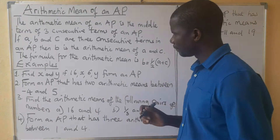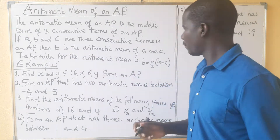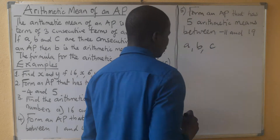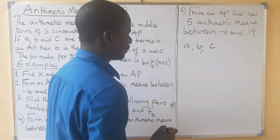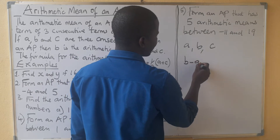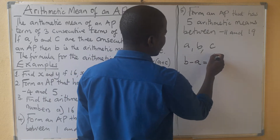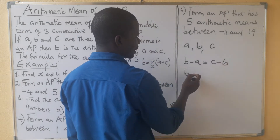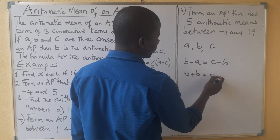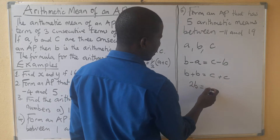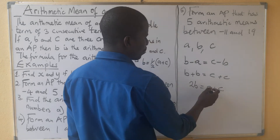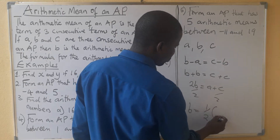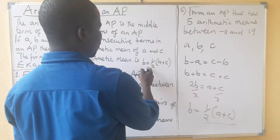How do we find B? If we have A, B, and C, we use the common difference formula. The common difference equals B minus A, which also equals C minus B. Solving for B, we get B plus B equals C plus A, which gives us 2B equals A plus C.